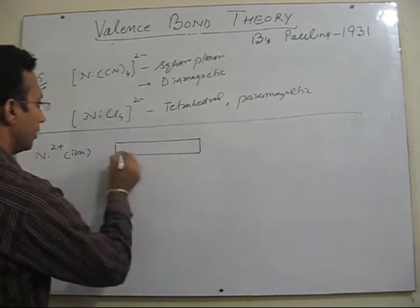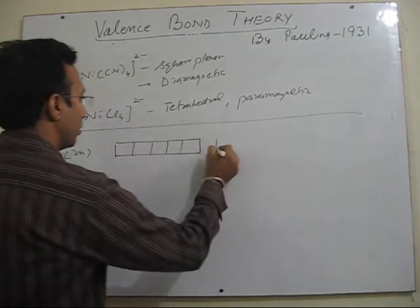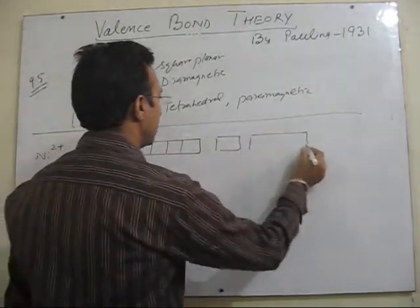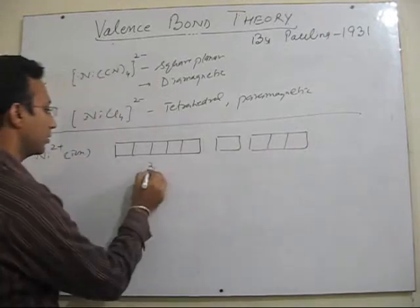So again I am taking nickel plus 2 oxidation state. I have written the configuration already. So just the orbital representation.